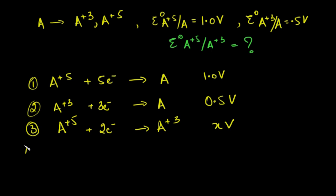So if you simply do reaction 1 minus reaction 2, what you'll get is A cancels, A+5 minus A+3 gives A+3 on this side. 5 electrons minus 3 electrons gives 2 electrons. So this reaction, 1 minus 2, becomes reaction 3, and the EMF becomes 1 minus 0.5, that is 0.5. So x value is 0.5. This seems like a simple method.